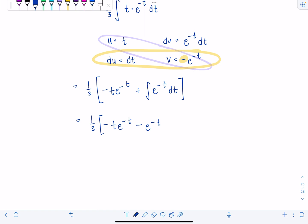Very good. Now we can anti-differentiate that, no problem. Just don't forget that 1 3rd. Negative t e to the negative t minus e to the negative t. So good.